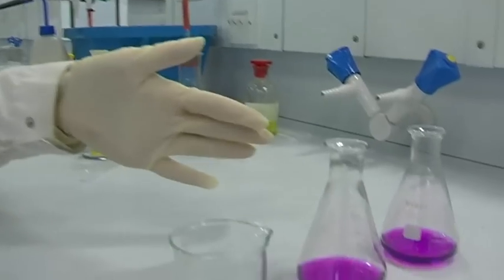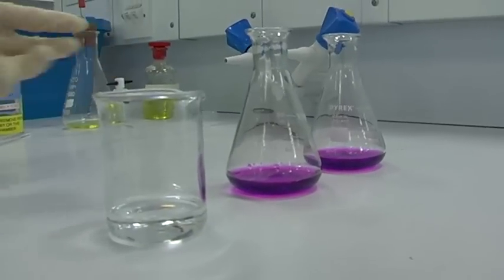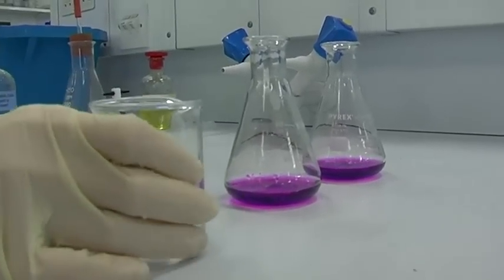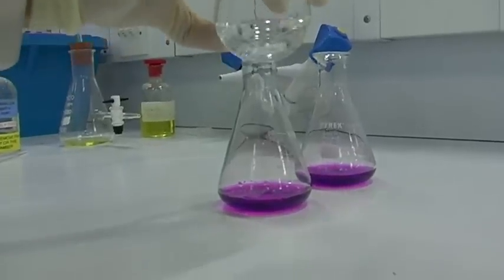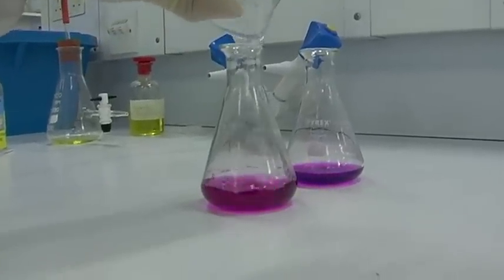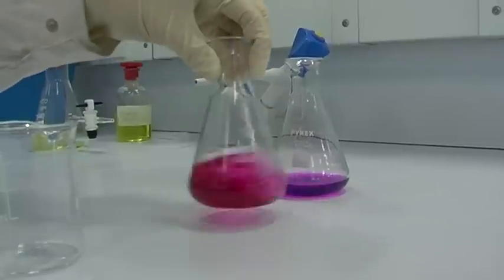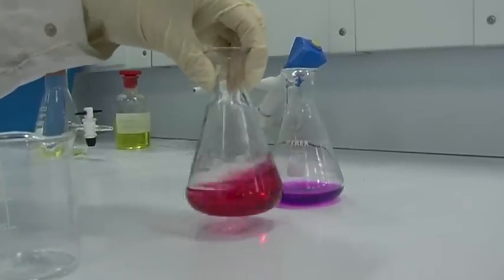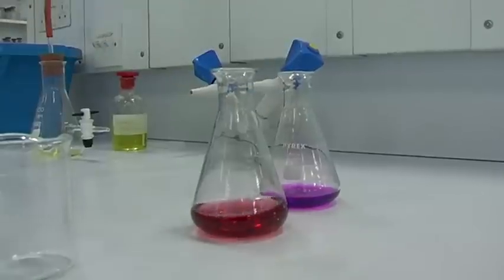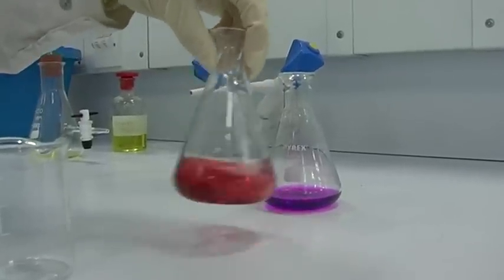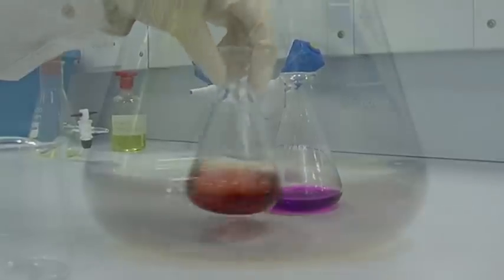Here I've got potassium permanganate solution which is a very distinctive purple color. Again I'm going to add alcohol, and in this case the manganese is in the 7 plus oxidation state initially and it reduces down to the 2 plus oxidation state. It's just gradually reducing down at the moment and it finally goes brown.